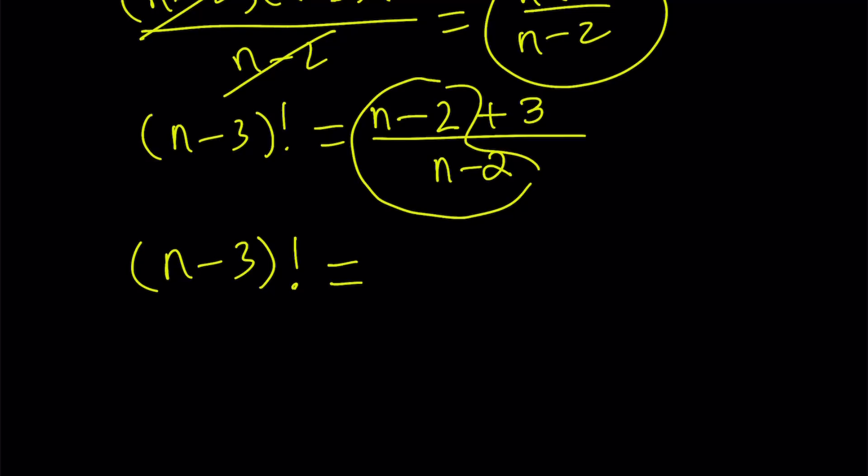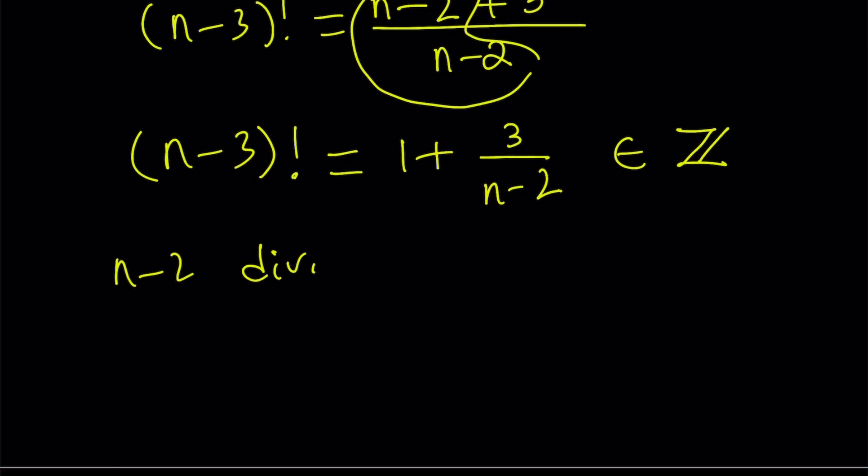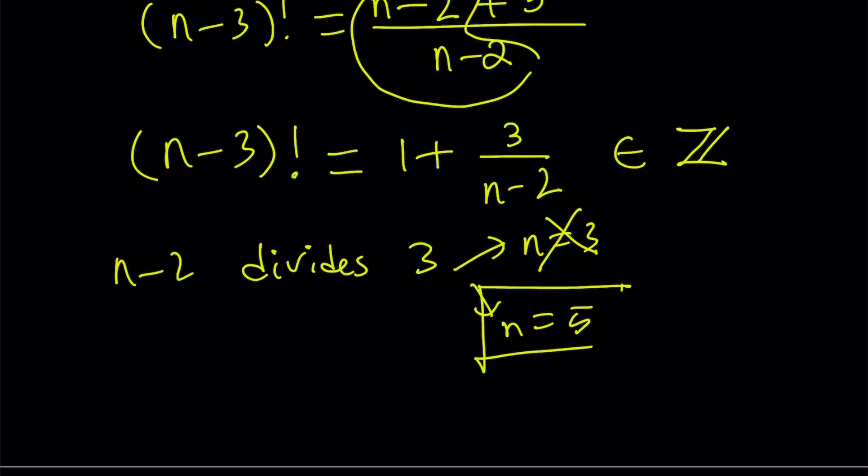Notice that we said this is an integer. So how can this be an integer? n minus 2 must be a divisor of 3. In order for n minus 2 to divide 3, n must be either 3 or 5. But if n equals 3, you're going to get 1 plus 1, which is 2, and on the left hand side you're going to get 0 factorial. So n equals 3 is not going to work, and we are left with the only solution n equals 5. And it actually does work.